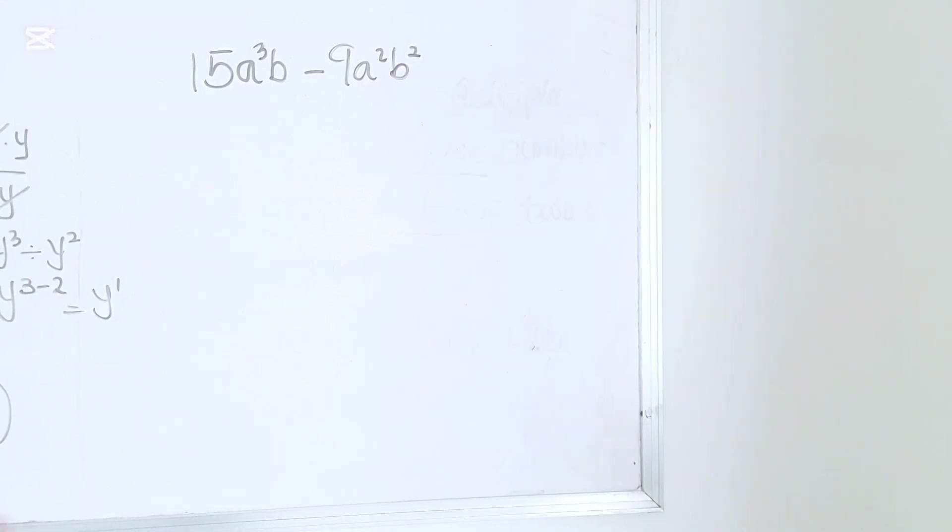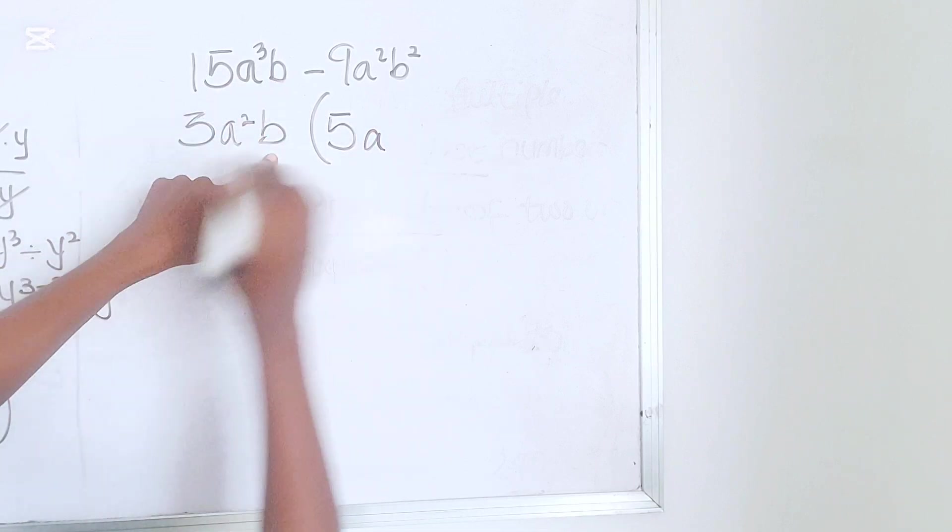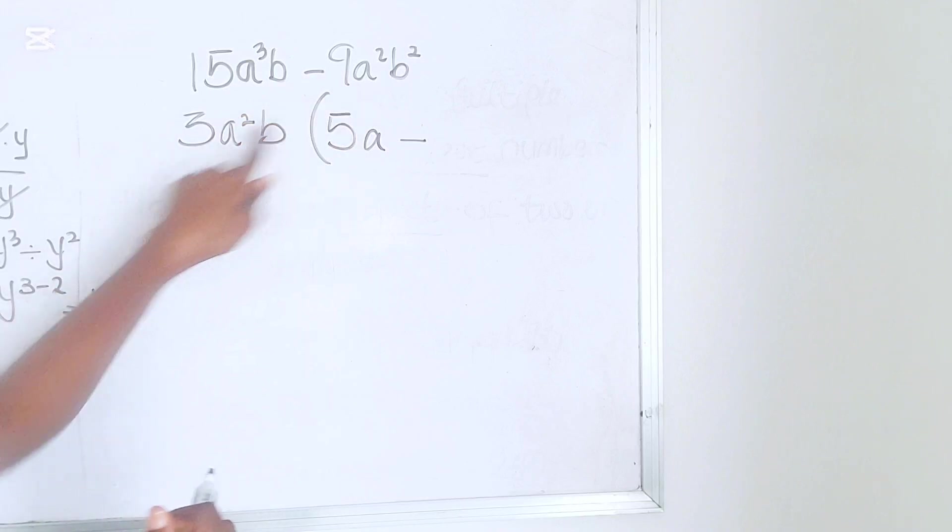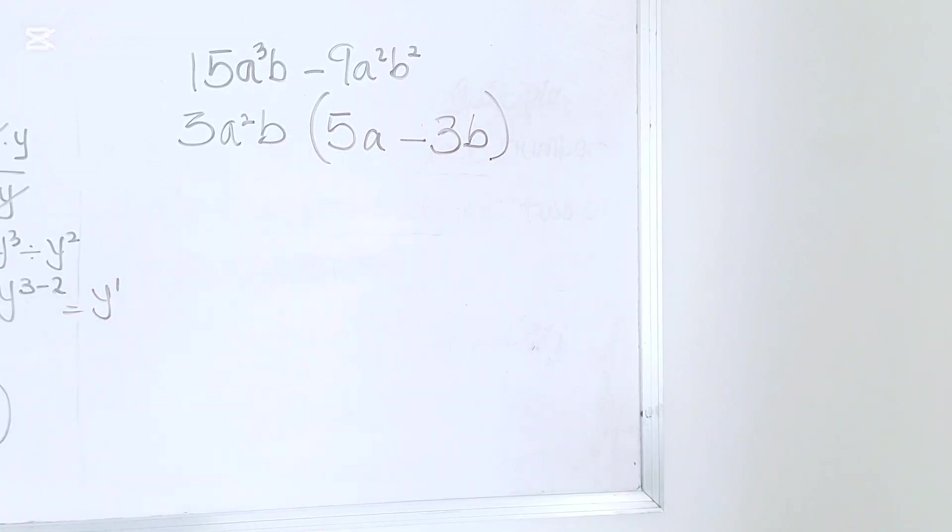First things first, look at your numbers. What's the highest common factor of 15 and 9? The highest is 3. So you have 3. Now moving to the letter. You have A here. You have A here. Which one has the lower power? A squared. You have B. You have B here. Which one has the lower power? B. Then you open your bracket, right? So 15 divided by 3 is 5.